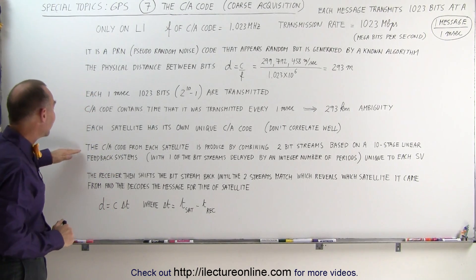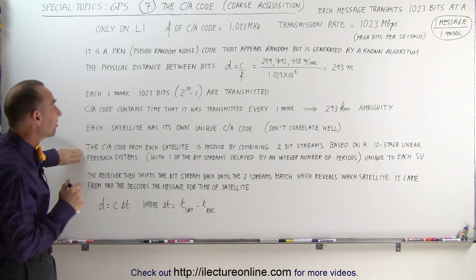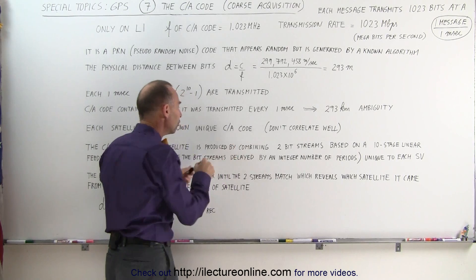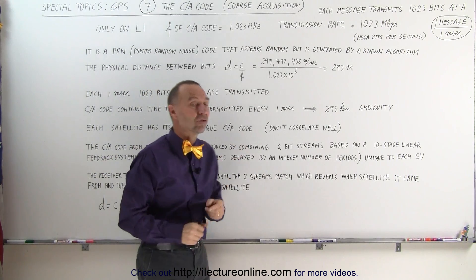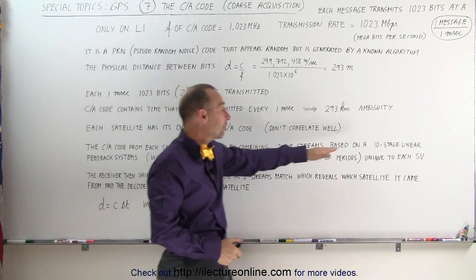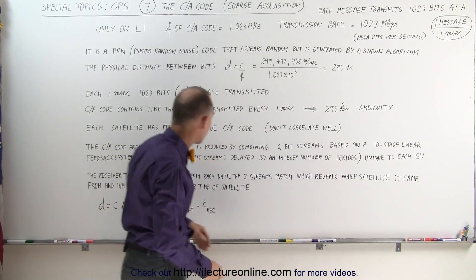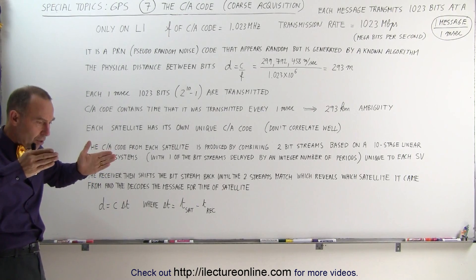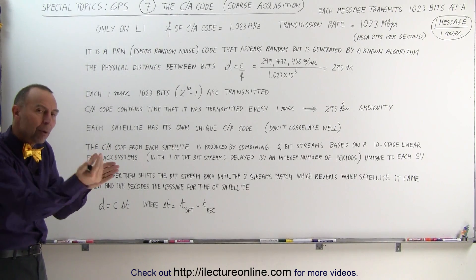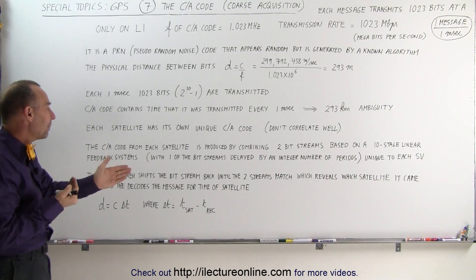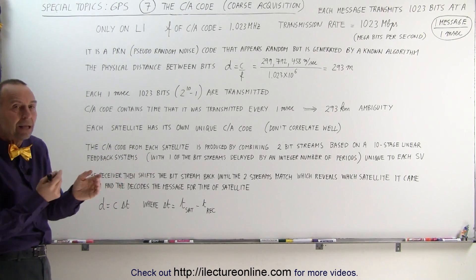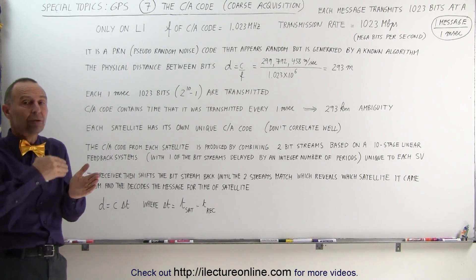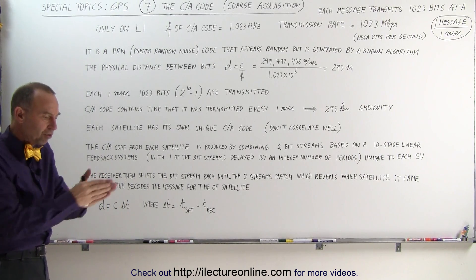The way it's done is that each CA code from each satellite is produced by combining two bit streams, and those two bit streams are combined based on what we call a ten-stage linear feedback system. What that means is we're taking two bit codes, combining them, but delaying one of them. One of the bit streams is delayed by an integer number of periods, and that delay code is unique to each satellite.